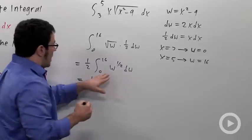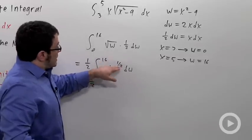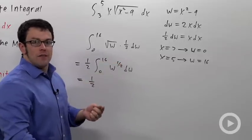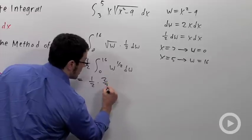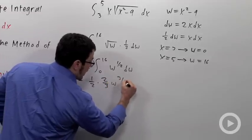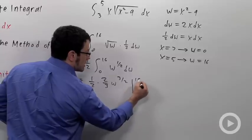This is 1 half. And now I need an anti-derivative for w to the 1 half. I raise the exponent by 1 to w to the 3 halves. And divide by 3 halves, which is the same as multiplying by 2 thirds. So this is 2 thirds w to the 3 halves. And I want to evaluate this from 0 to 16.